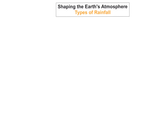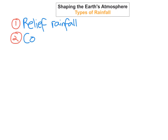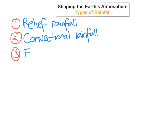So we're going to look at the different types of rainfall, and you've got three different types of rainfall. The first one is relief rainfall, the second type is convection rainfall, and the third type is called frontal rainfall. For your junior certificate examination, you need to know these three different types of rainfall and the formation of each. These come up quite a lot in the junior certificate examination, and we're going to go through each of them now.